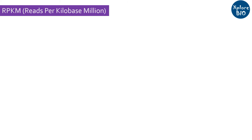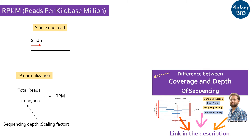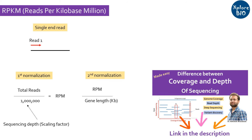The first method is RPKM, or reads per kilobase million. It is mainly meant for analyzing single-ended RNA sequencing data, where a single read corresponds to a single fragment. To calculate RPKM, all the reads of the sample are first counted and divided by a scaling factor of 1 million to obtain reads per million, or RPM. This is the first normalization, based on sequencing depth. This is then followed by a second normalization, dividing by the gene length in kilobases to get RPKM.